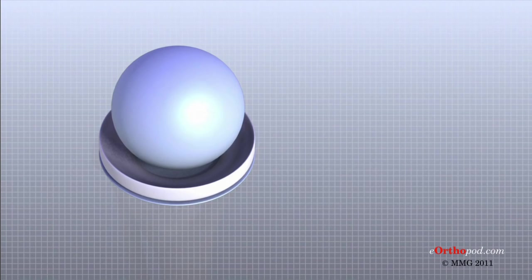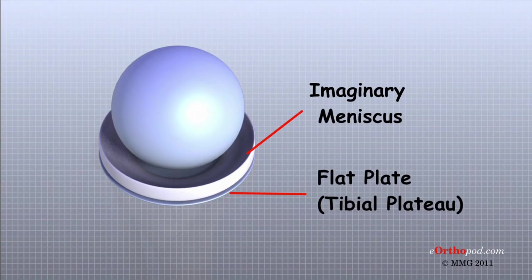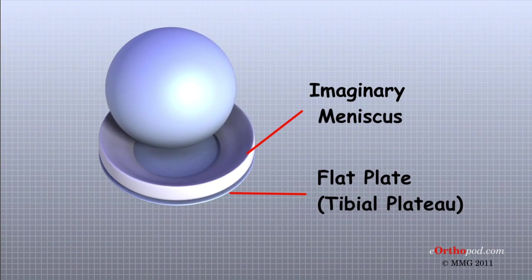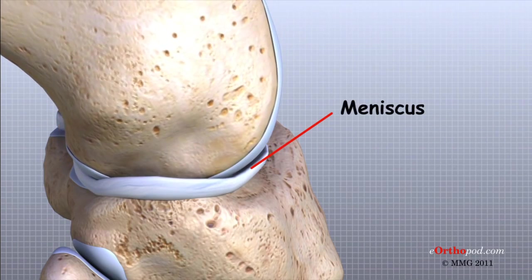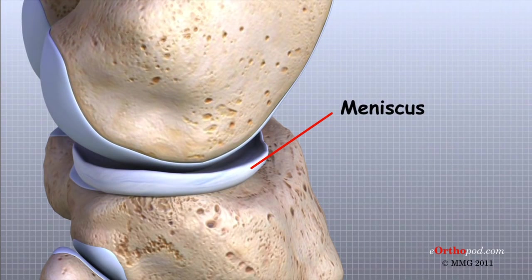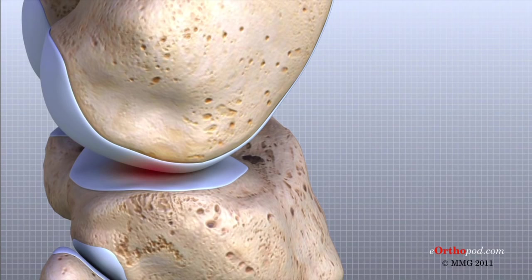Imagine the knee is a ball resting on a flat plate. The ball is the condyles of the femur and the plate is the tibial plateau. The menisci actually wrap around the round condyles to fill the space between them and the flat tibial plateau. The menisci act like a gasket, helping to distribute the weight from the femur to the tibia. Without the menisci, any weight on the femur will be concentrated to one point on the tibia. But with the menisci, weight is spread out across the tibial surface, protecting the articular cartilage from excessive forces and preventing degeneration over time.